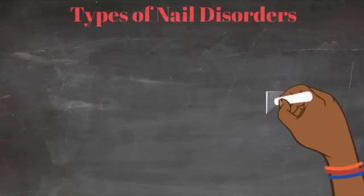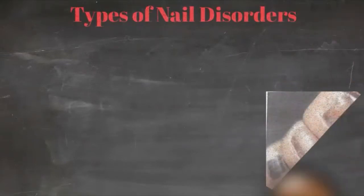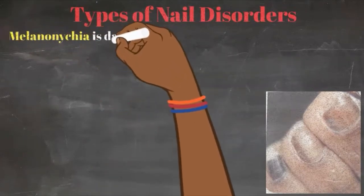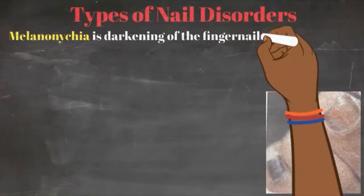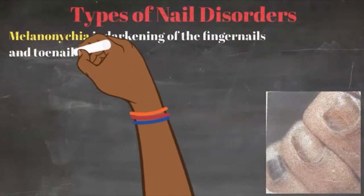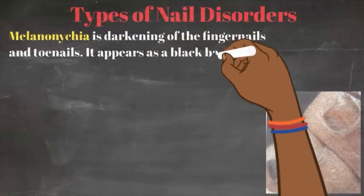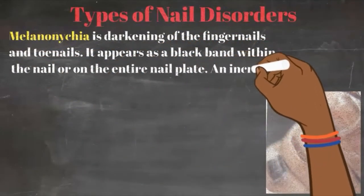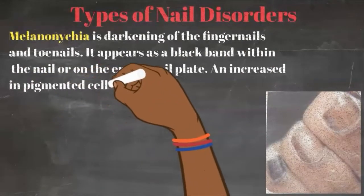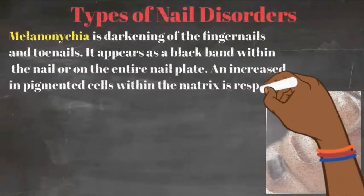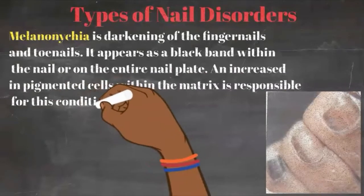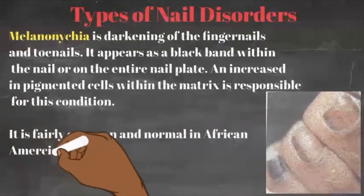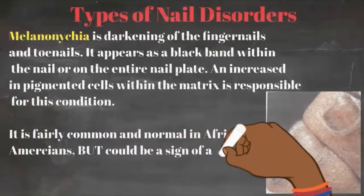The next one is called melanonychia. This is something you might even see in yourself — it's simply a darkening of fingernails and toenails. It appears as a black band within the nail, or sometimes the entire nail. It is an increase in pigmented cells within the matrix that is responsible for this condition. It is fairly common and normal in most African Americans, but it can be a sign of disease if you notice it on someone who is Caucasian.